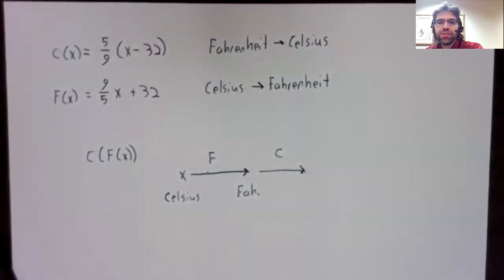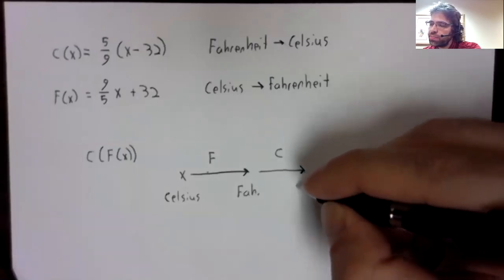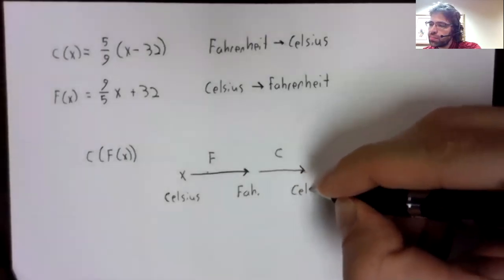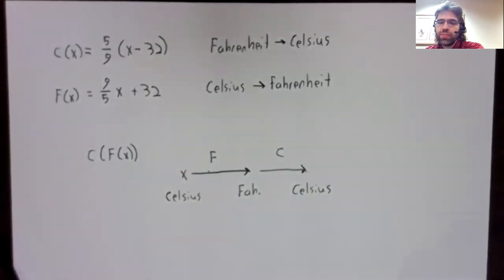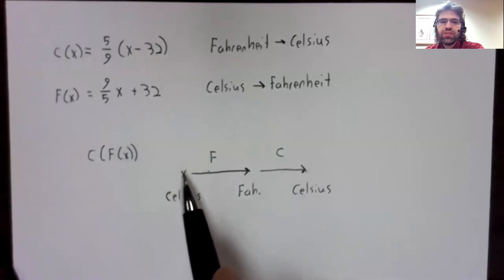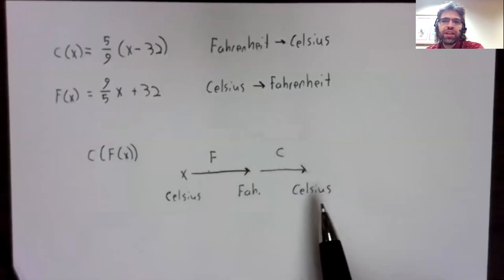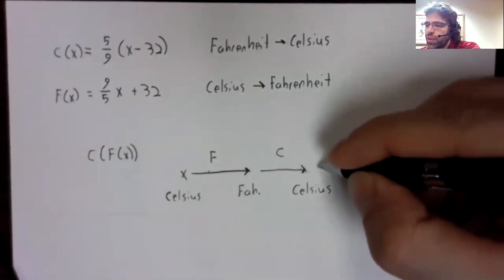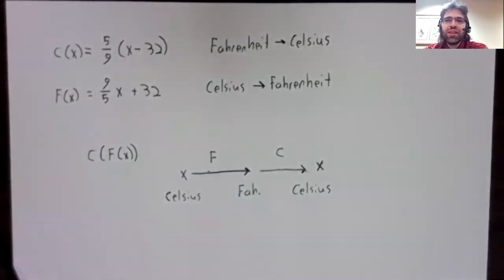Then we apply the function c. So what this first function does is take a temperature in degrees Celsius and convert it to degrees Fahrenheit. The second function, c, takes a temperature in degrees Fahrenheit and converts it to degrees Celsius.